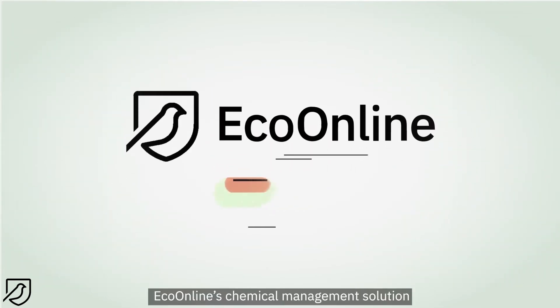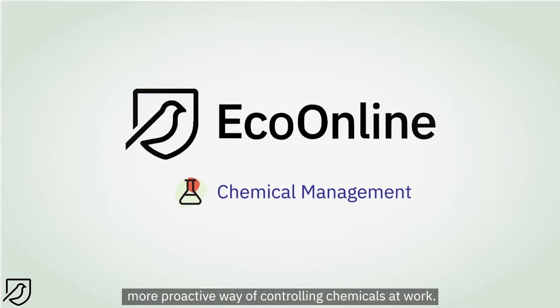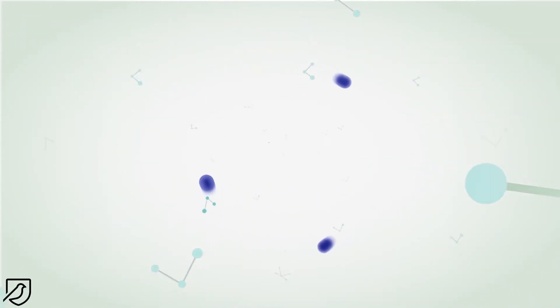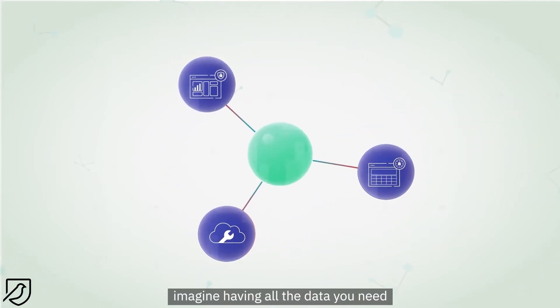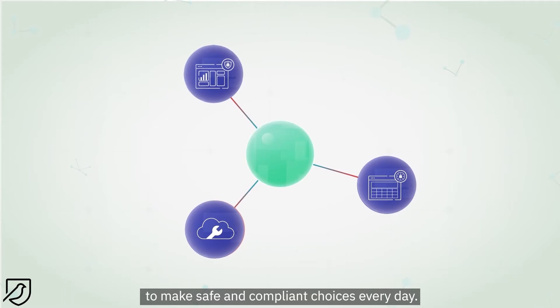EcoOnline's chemical management solution is an easier, more proactive way of controlling chemicals at work. With user-friendly cloud-based tools, imagine having all the data you need to make safe and compliant choices every day.